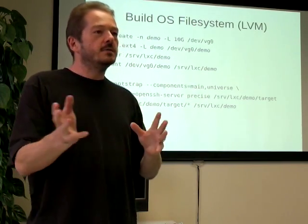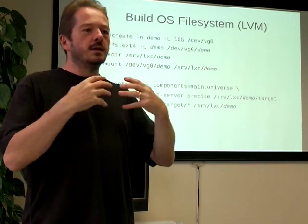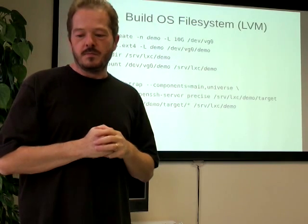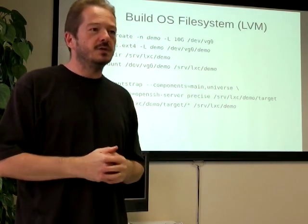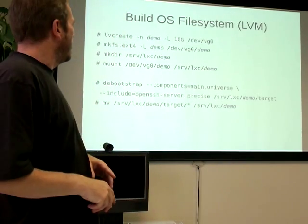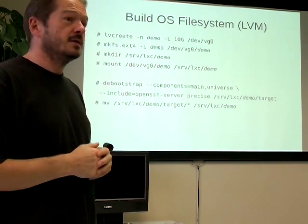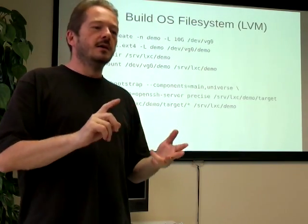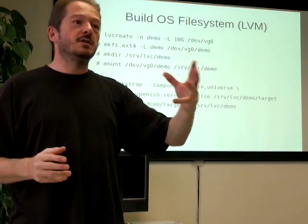A feature of Debian and related installers is the debootstrap command, where you say go away and create me an installed operating system tree in this destination. You specify the release and a place to put it. I've specified main and universe because I'm expecting to install packages from universe. It doesn't include an SSH server by default, so I'll add that. If I know what I want up front, I can include OpenJDK, Maven, Ant, C++ compiler — all those things — or I can install them later.